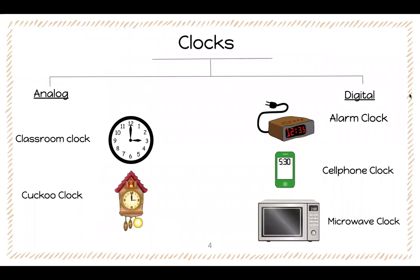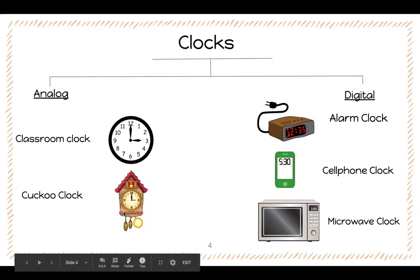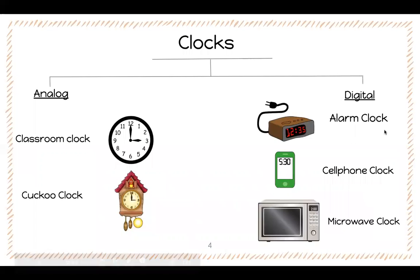We've already made you a tree map of the different types of clocks that you may have seen before. We have analog and digital. In your classroom you may have seen a classroom clock — it looks like this with the hands and the numbers. Or you may have seen a cuckoo clock where it has the little bird that jumps out on every hour. There are also digital clocks where it just has the number written, and that can be an alarm clock, a cell phone clock, or a microwave clock. I want you to continue my list of other places you've seen these types of clocks, talk about what is the same and what is different, and write it in your math journal.